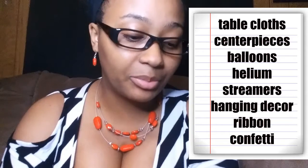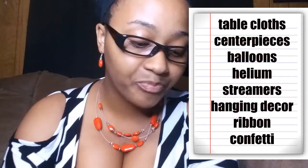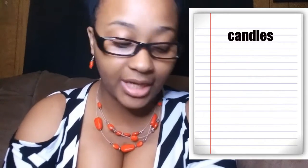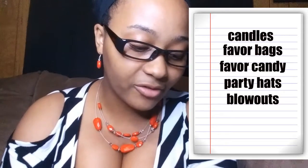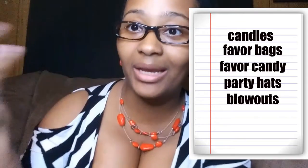The last thing you need to worry about is decorations. I'm going to read off what I have: tablecloths, centerpieces, balloons, helium, streamers, hanging decorations, ribbon, confetti, candles for the cake, favor bags, favor candy, party hats, blowouts — those noise maker things kids like — and a banner. That's pretty much what I have for party planning for a first birthday party.